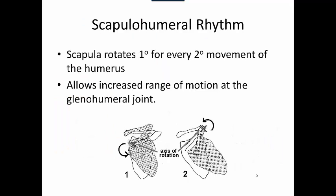We also have something called scapulohumeral rhythm. The scapula rotates one degree for every two degrees of movement of the humerus, which basically increases the range of motion at the glenohumeral joint.